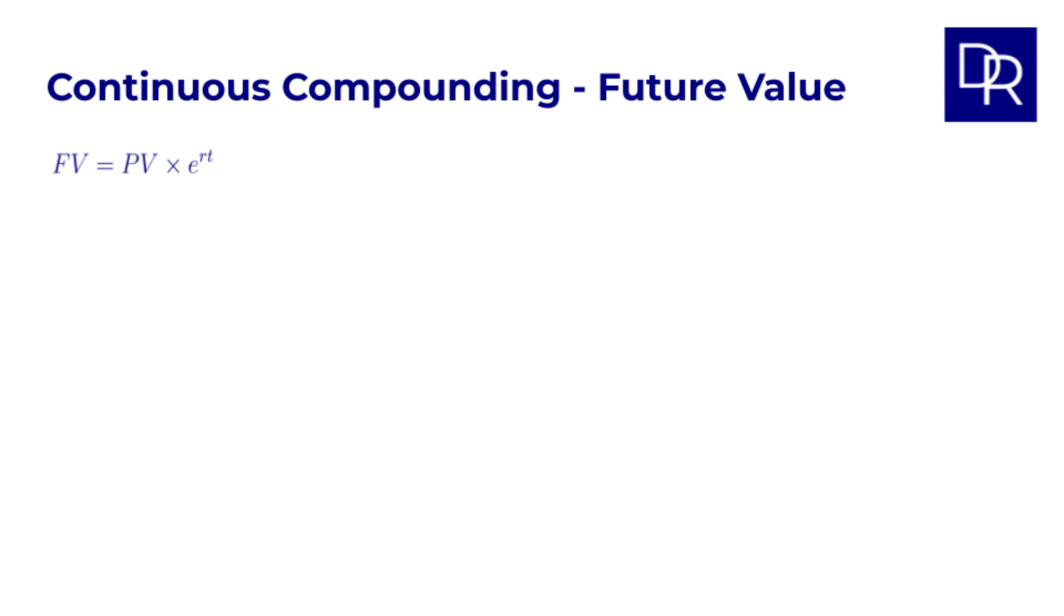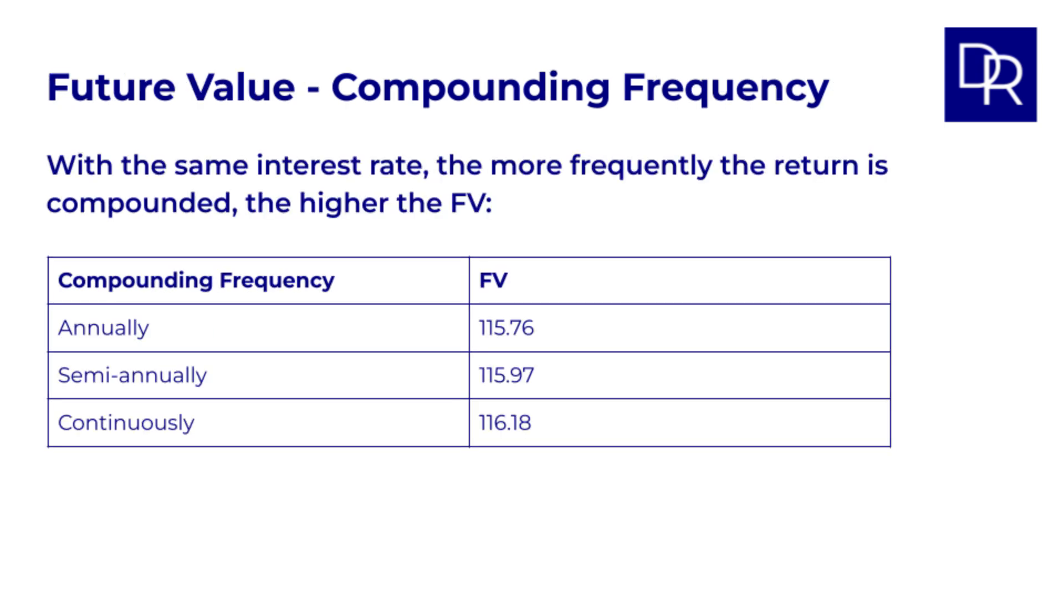In lesson 6, we looked at this formula in detail and saw how to derive it in case you're interested in that. Let's take our initial investment of 100 at a 5% annual interest rate for 3 years, and see what the future value would be with continuous compounding. FV equals 100 times E to the power of 0.05 times 3 equals 116.18. You can see that with continuous compounding, the future value is slightly higher than with annual and semi-annual compounding. The more frequently you compound, the more you get at the end.